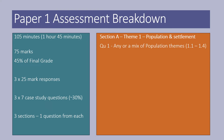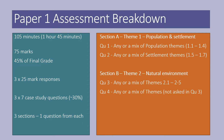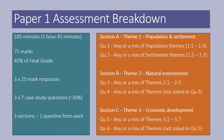Section A is theme one. Question one tends to be any or a mix of population theme questions. Question two is any or a mix of settlement theme questions. Section B, theme two, is any or a mix of themes from 2.1 to 2.5, and question four covers any of the themes not asked in the previous question. Section three, theme three, follows the same structure as section B.